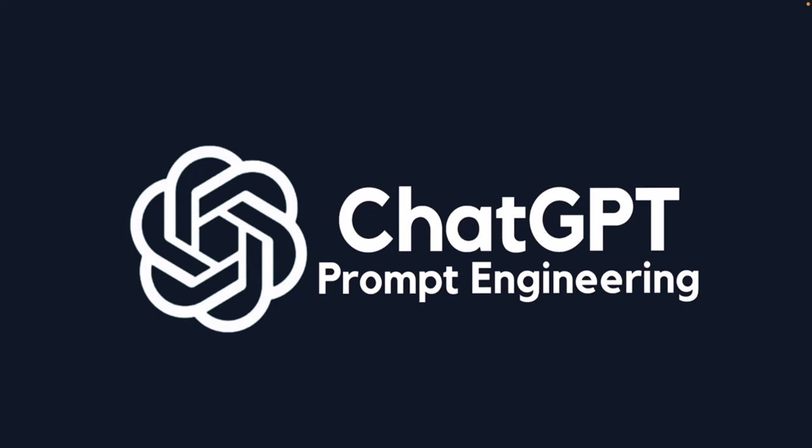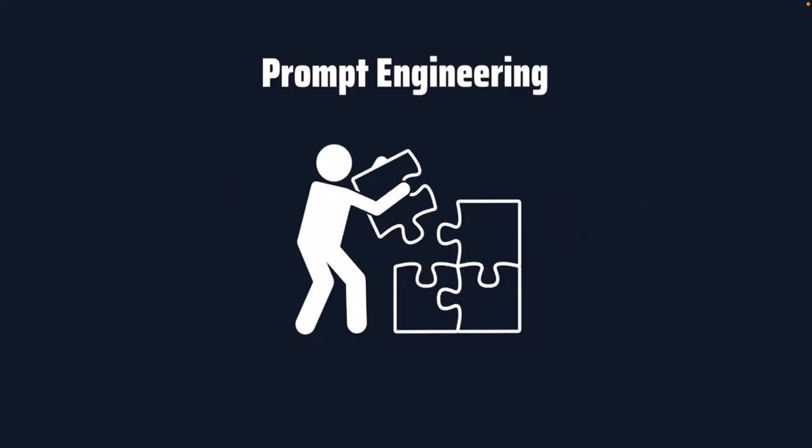A good prompt will always get a better response, and that's the purpose of this course — to get better responses when using ChatGPT. Prompt engineering is a technique used for refining large language models like ChatGPT to obtain a desired output. It's the process of building prompts for AI models to enhance their performance on specific tasks. Every time we build a good prompt, we increase the chances of getting a good response.